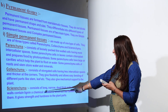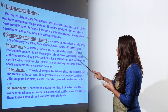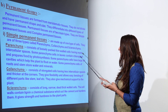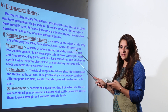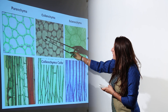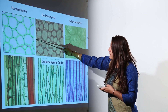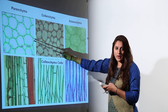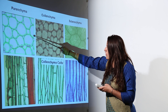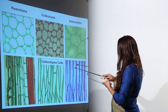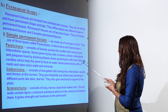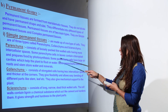Parenchyma cells are thin-walled cells with more intercellular spaces. As shown, parenchyma cells are large prominent cells with a large vacuole and thin cell walls. They also have large air cavities which help them float on water.